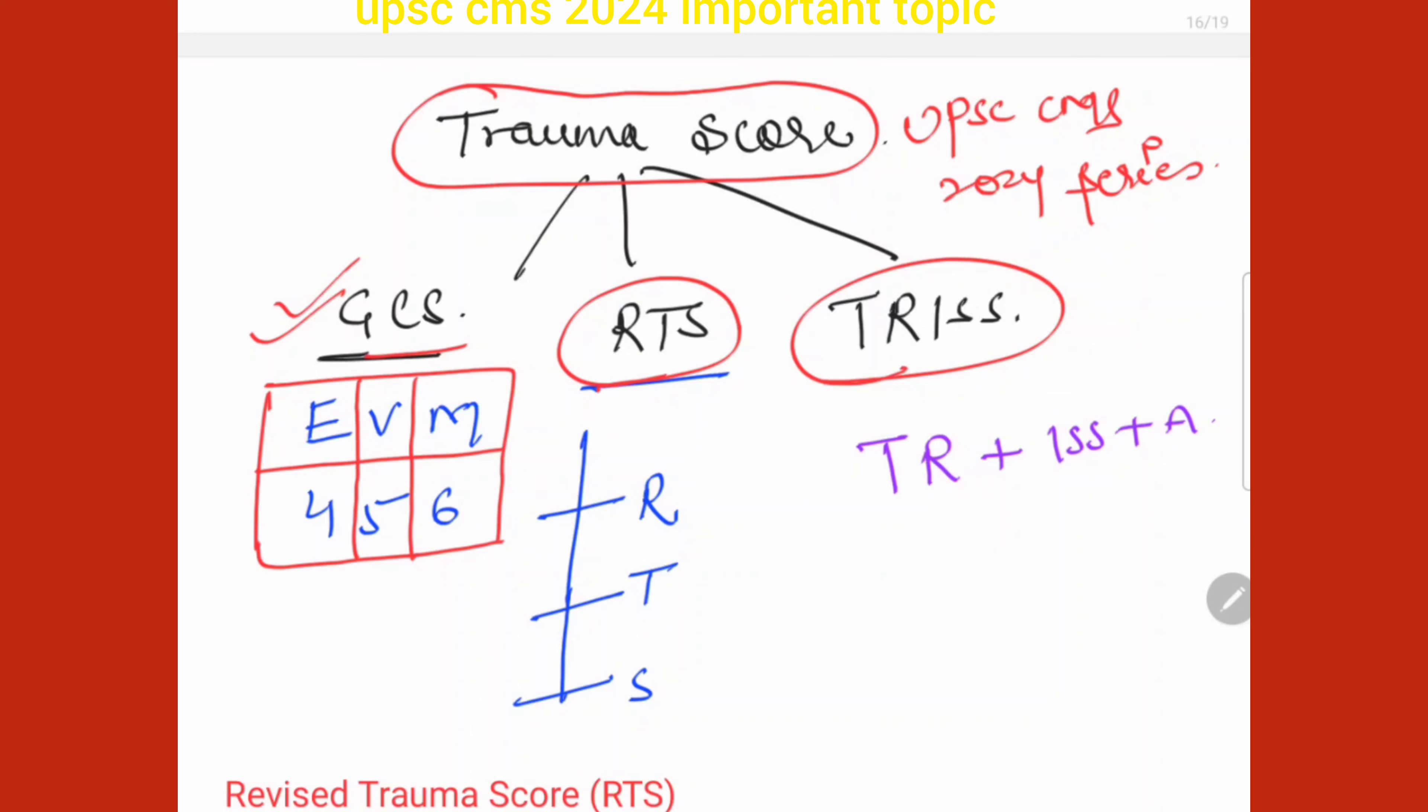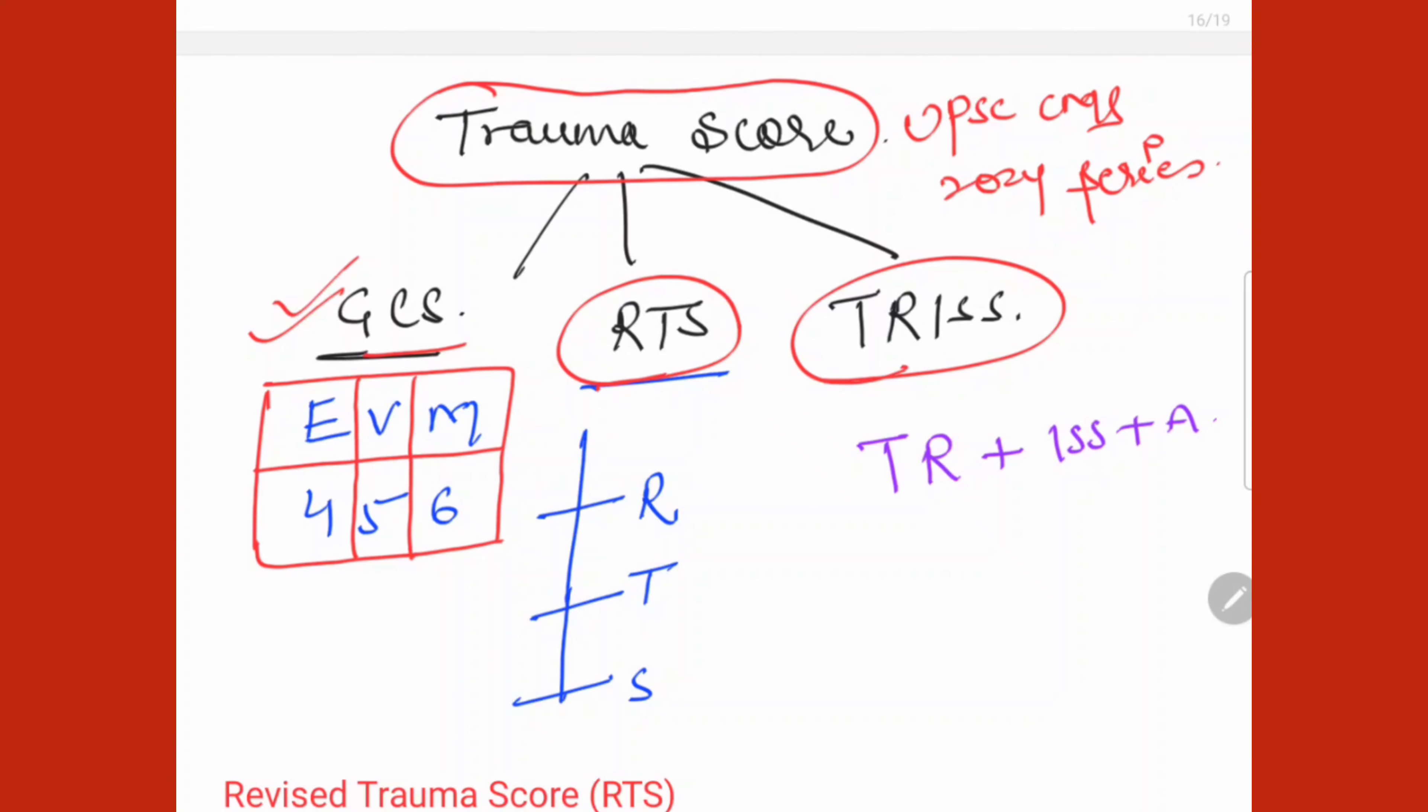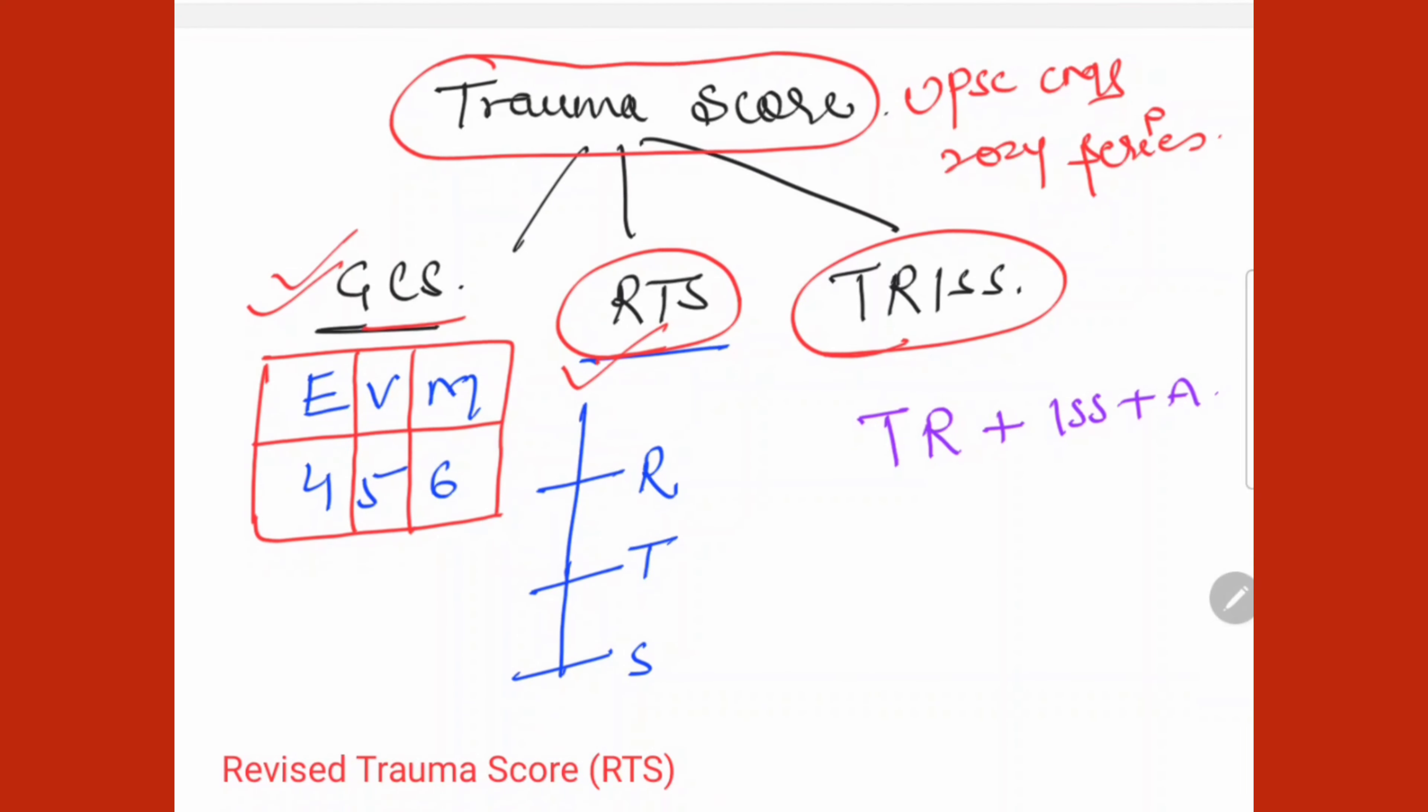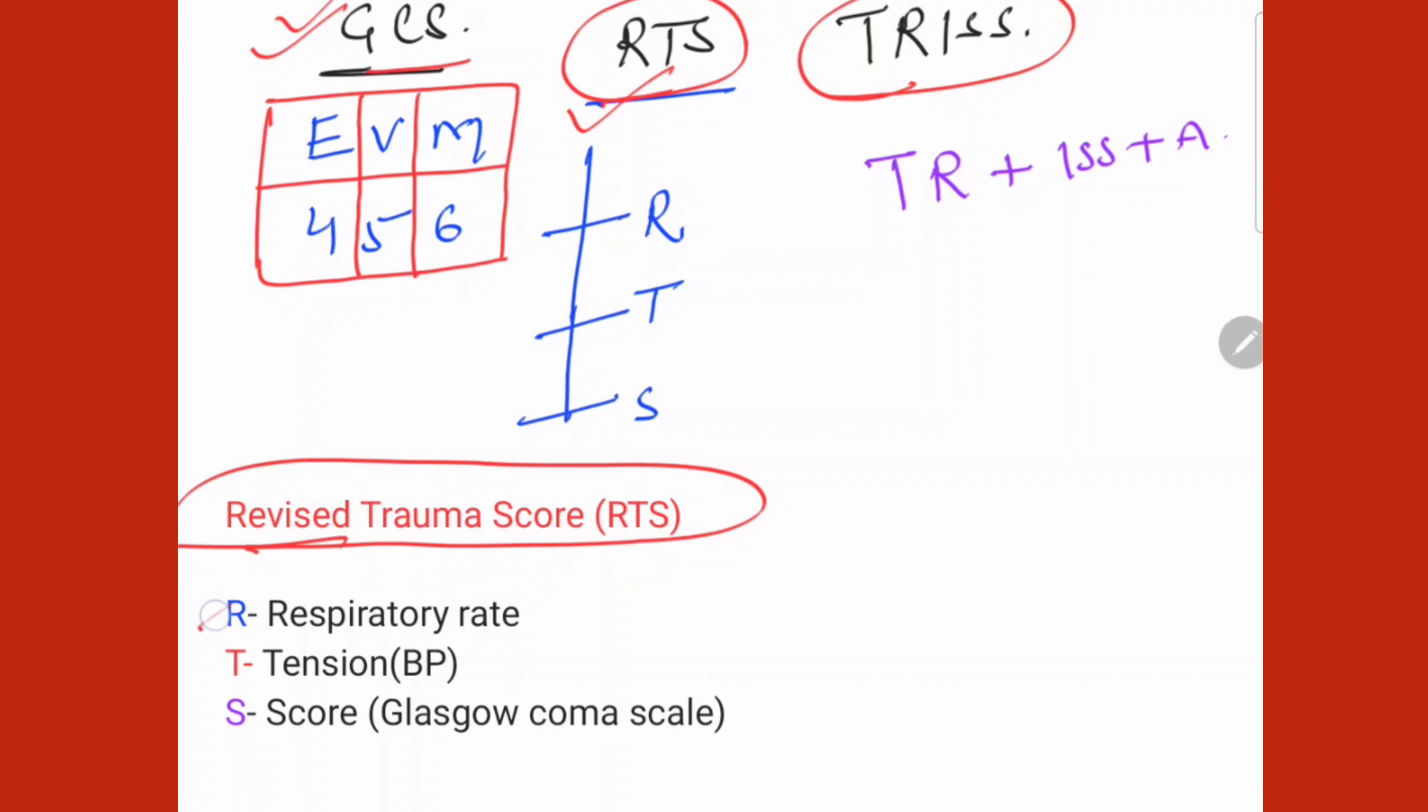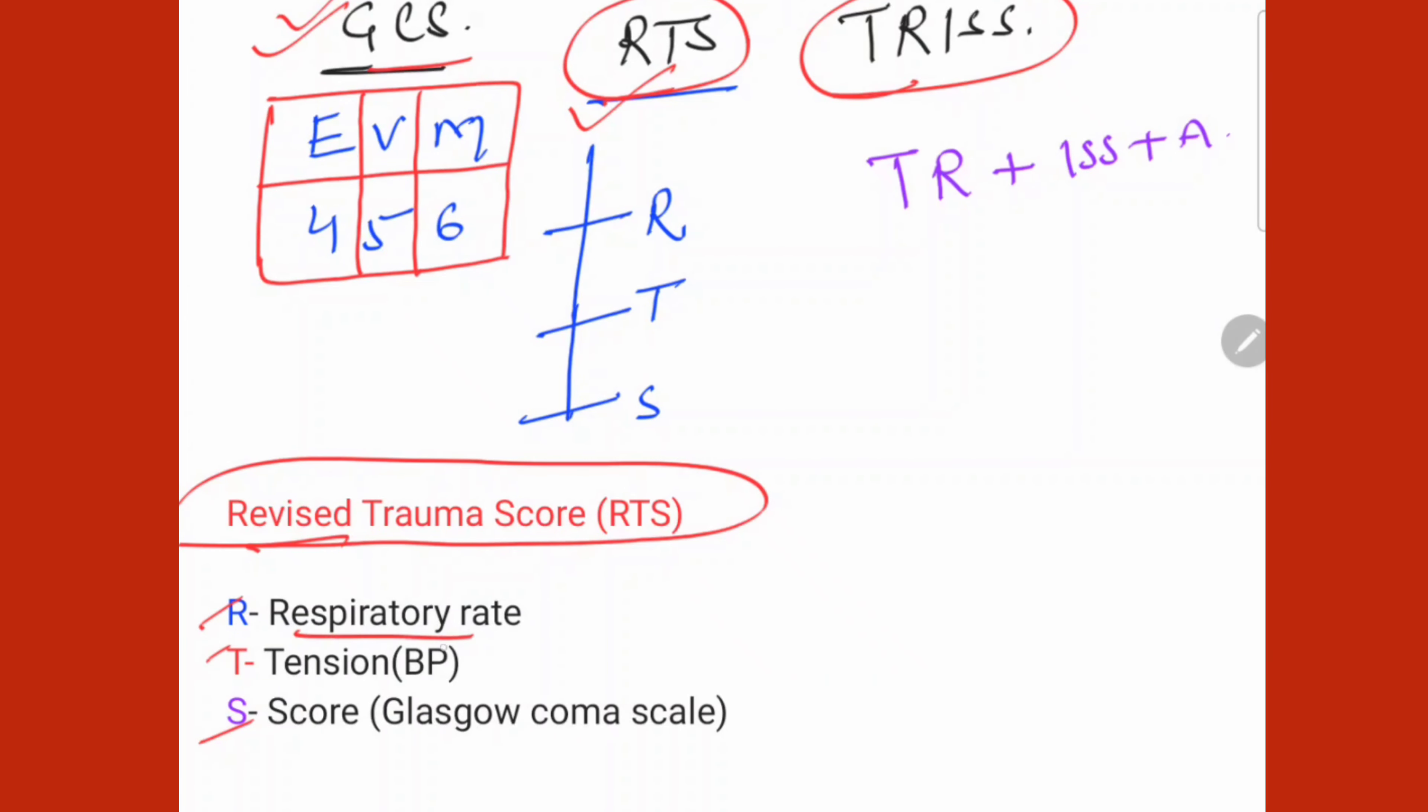GCS everyone knows, but let me explain the mnemonic because there's a lot of confusion. RTS means Revised Trauma Score. How to remember RTS? R means Respiratory Rate, T for Tension meaning Blood Pressure, S for Score which is Glasgow Coma Scale.